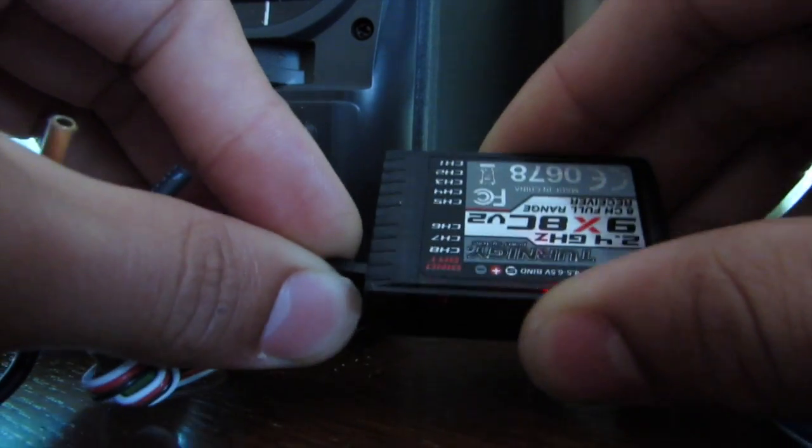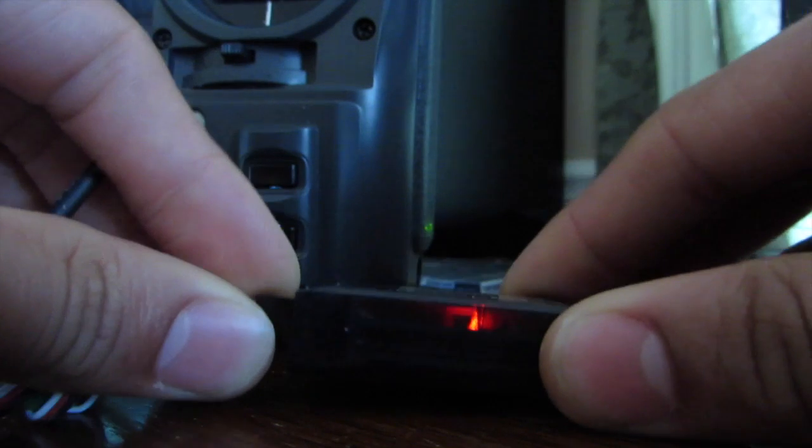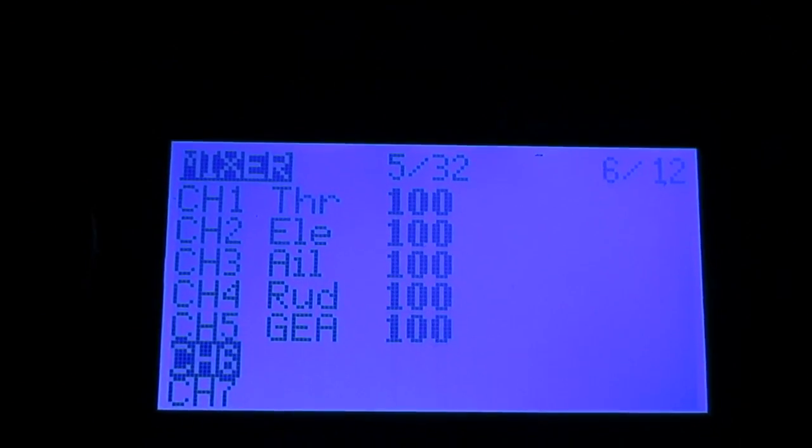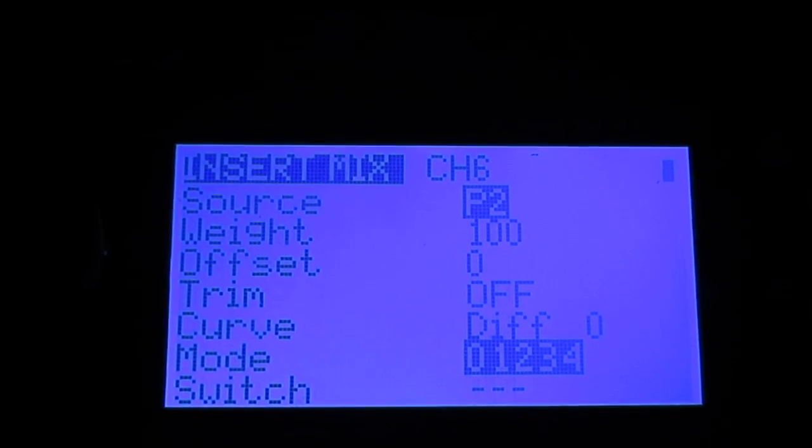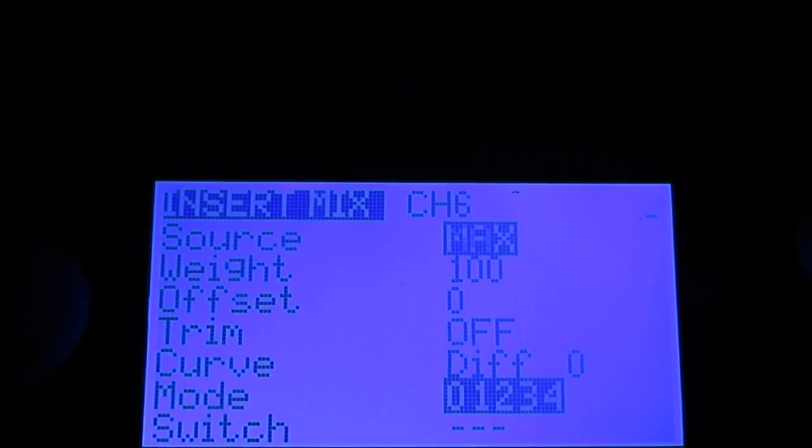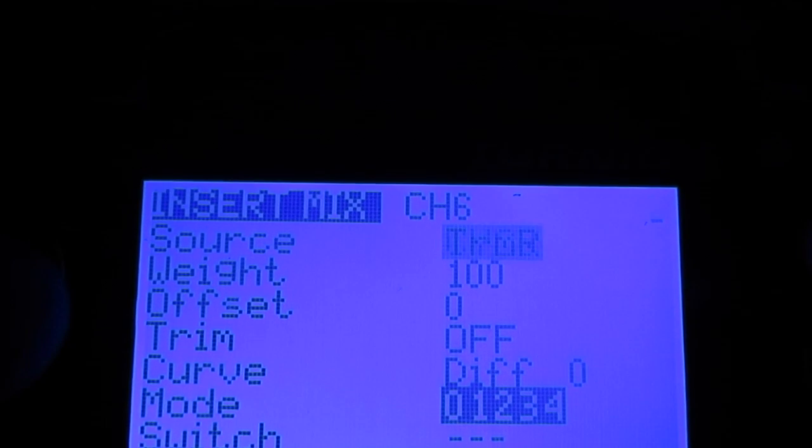Before you move on make sure that you have power going to your receiver. Now on your radio you will need to program any switch, knob, or joystick to that empty channel. This could be a throttle input, a switch, or a knob.